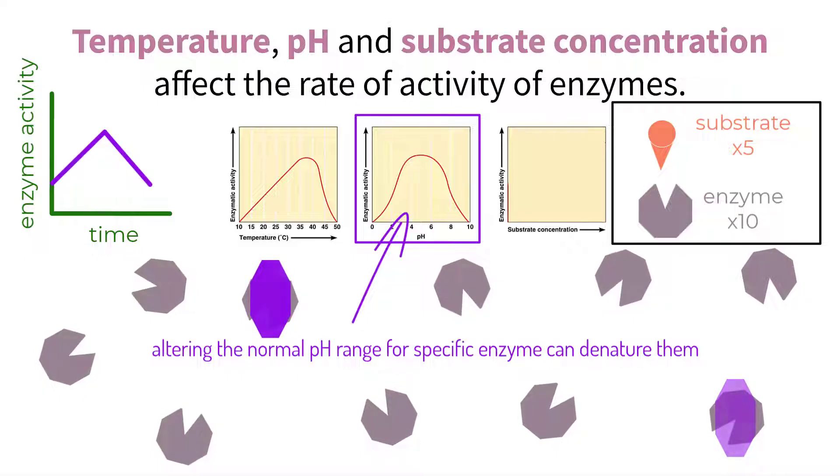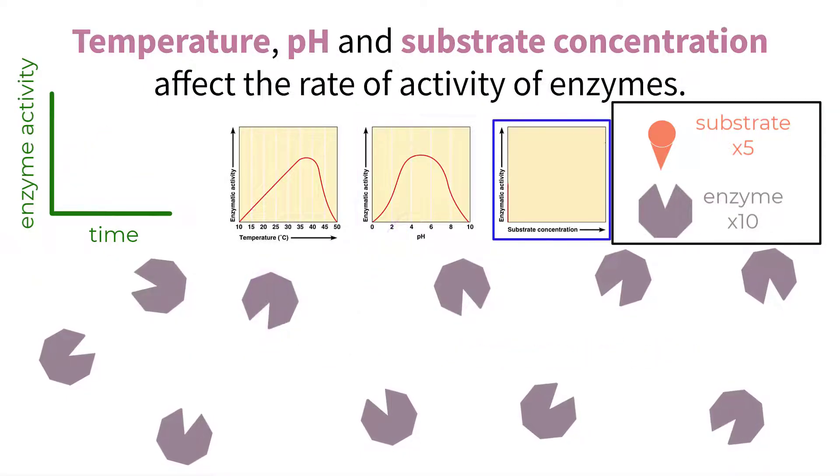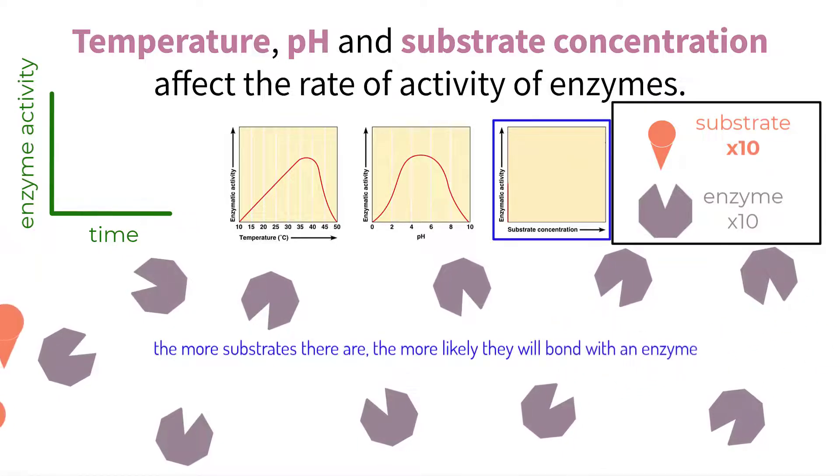Not being able to bond to the active site means the enzyme activity will decrease, and this goes for both an increase and decrease in pH from the optimal peak of enzyme activity. Lastly, we have substrate concentration. In this example so far, we have been operating with about five substrates per five seconds of time with ten total enzymes. If we were to increase the amount of substrates we have to ten, we would effectively double the rate of enzyme activity because we would be utilizing all of our enzymes at any given moment.